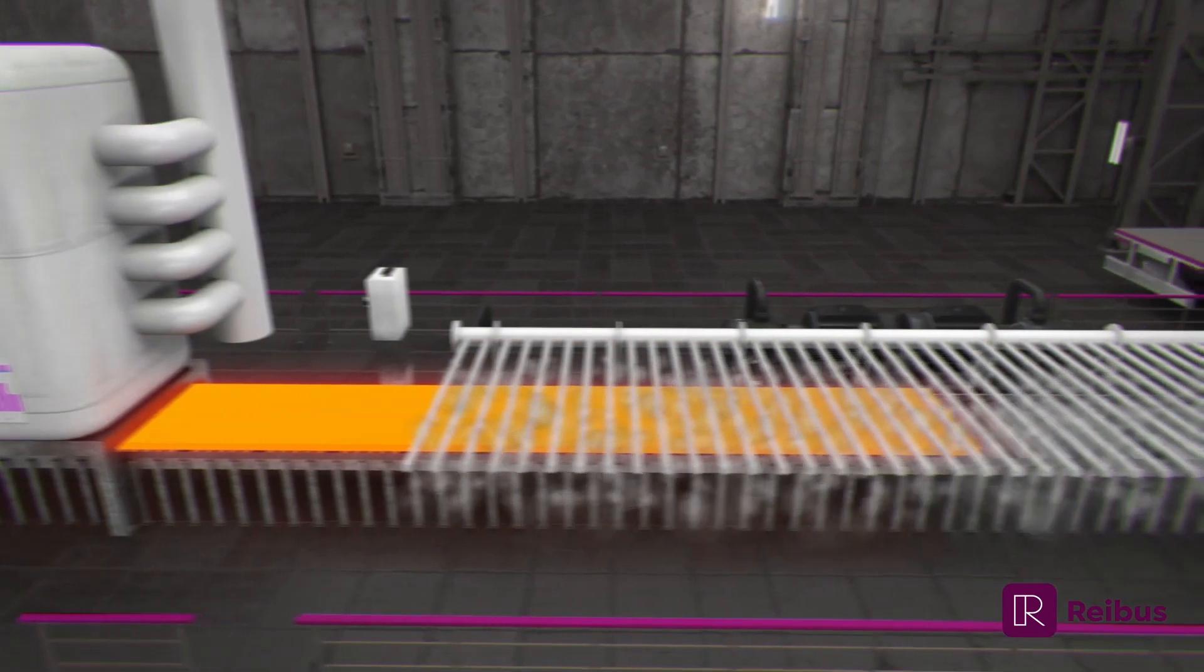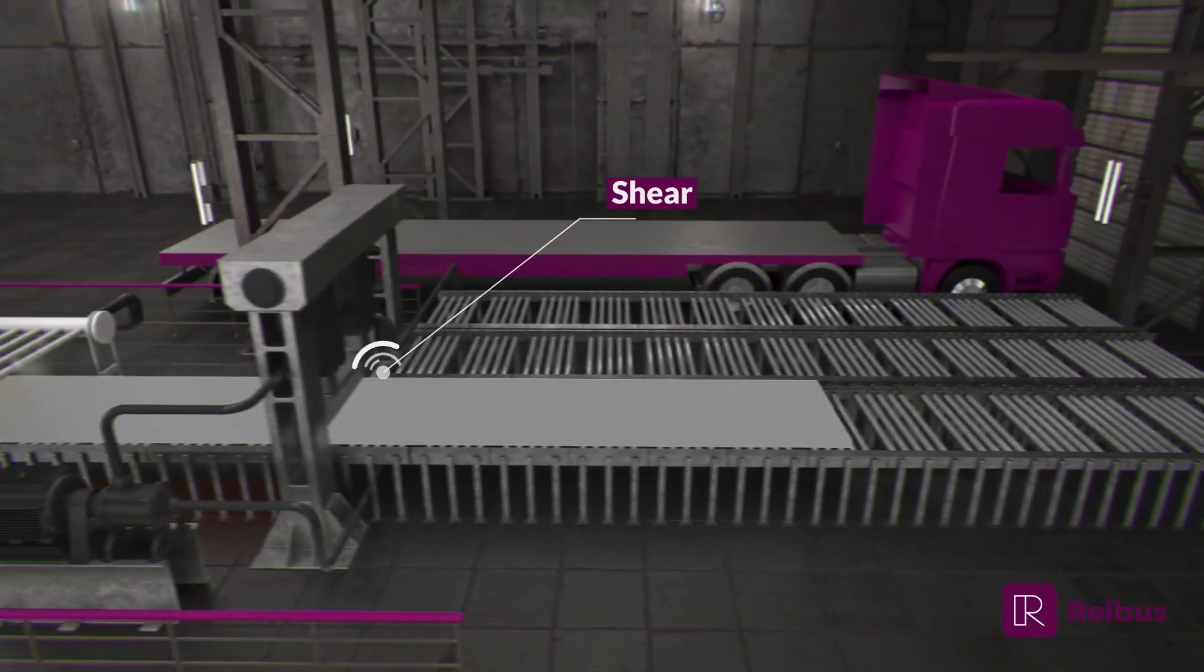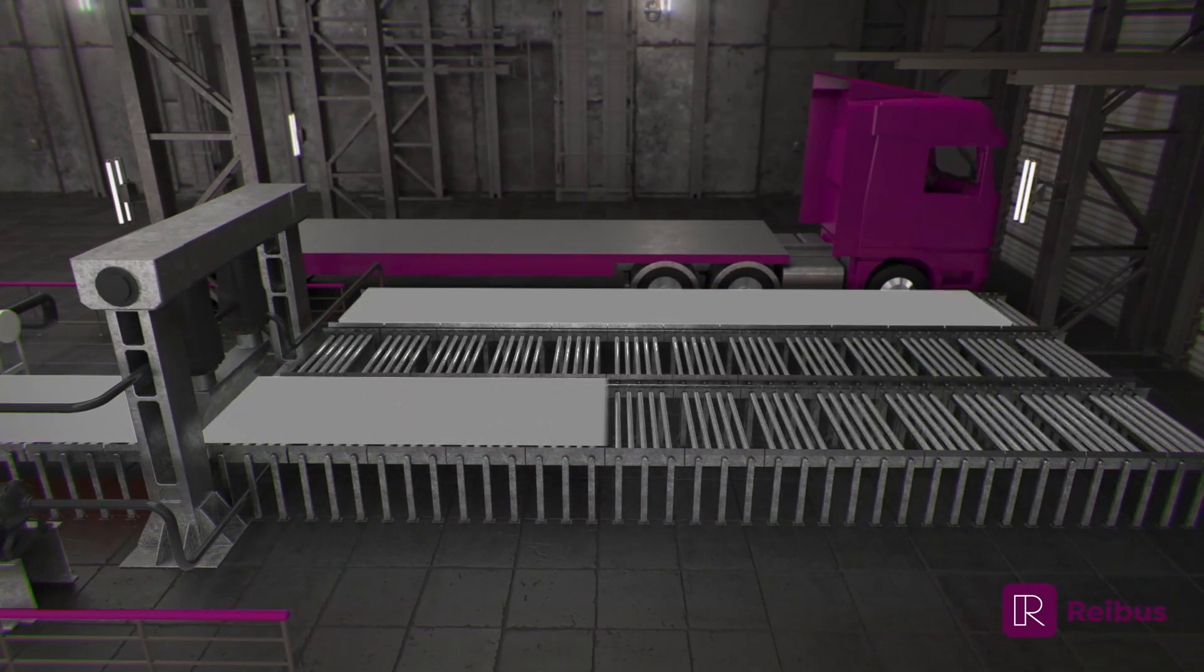Next, the plate is cooled via water sprays, after which a shear will crop the plate into the appropriate lengths before it exits the process to a cooling bed.